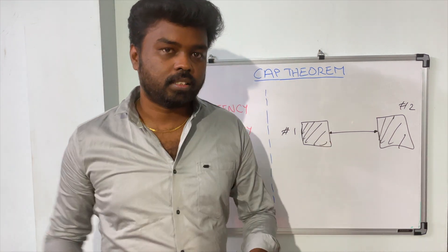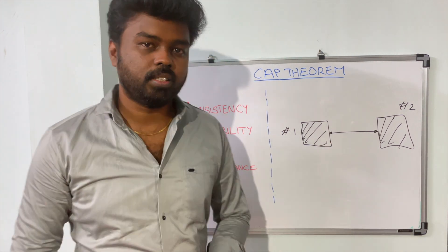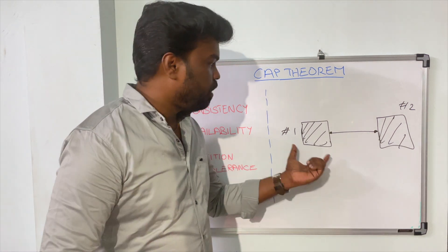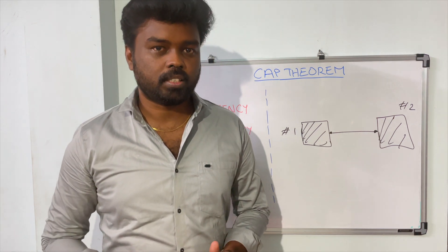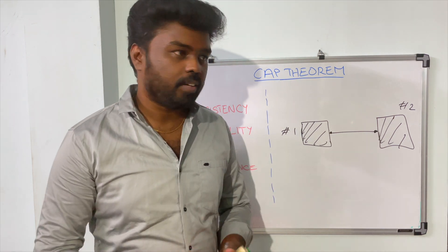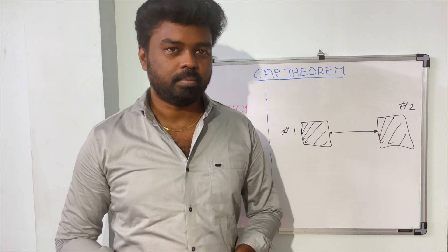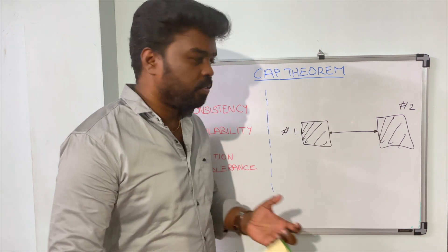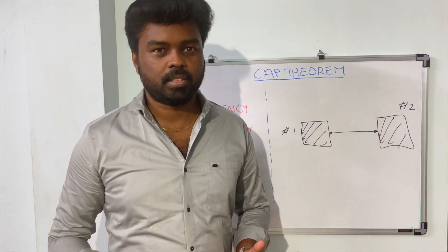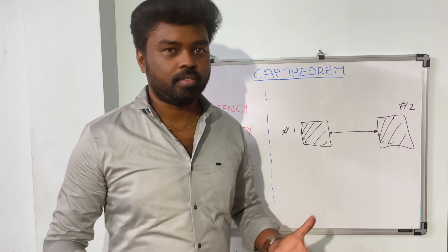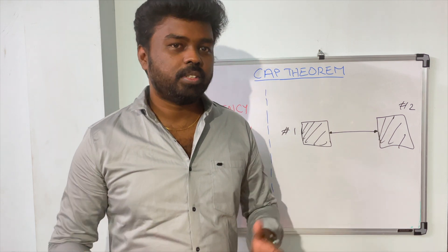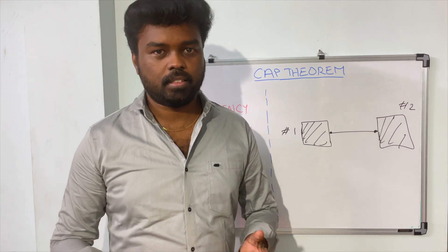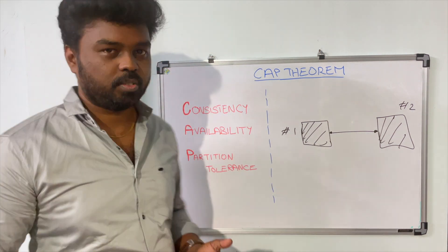Now with this system in mind, let's talk about the attributes of the distributed system. The first attribute is consistency, which means no matter how many nodes you have in your distributed system, whenever you request your data from any of the nodes, the data should be consistent. In a distributed system you will have a large number of nodes, and no matter how many nodes you have, whenever we request data from any node it should always give consistent data. That's what consistency actually means.